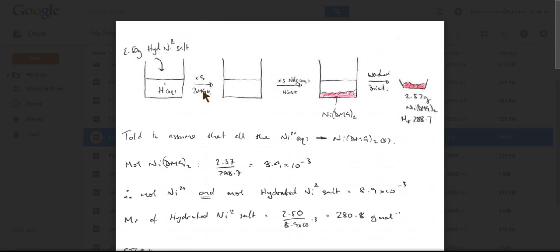So let's go through the calculation then. The moles of NIDMG twice are going to be the mass over the MR. So that's 8.9 times 10 to the minus 3. And therefore the moles of hydrated nickel 2 salt will be the same, 8.9 times 10 to the minus 3.